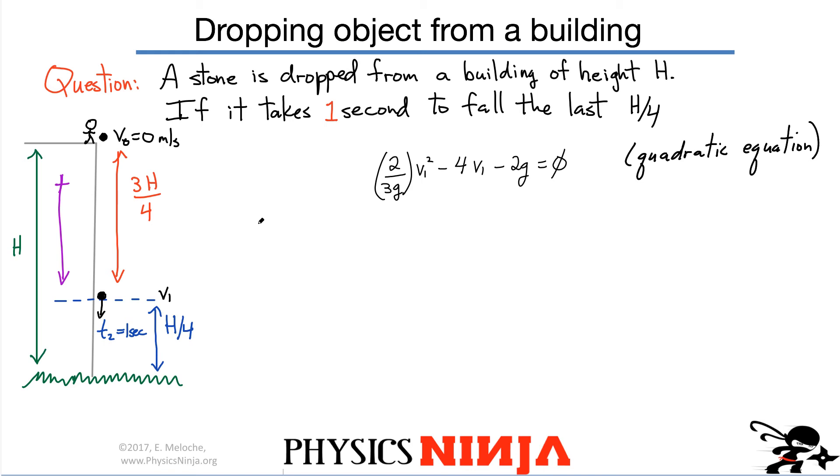All right. So here's the quadratic equation. That means the solutions to this equation are simply minus B. The B term is here. So that's 4 plus or minus square root of B squared, which is 16 minus 4AC. So minus, here's the C term. So that's going to turn into a positive. 4. The C term is 2G. And the A term is 2 over 3G. And divide it by 2A. Don't forget that term. So that's 2 times 2 over 3G.